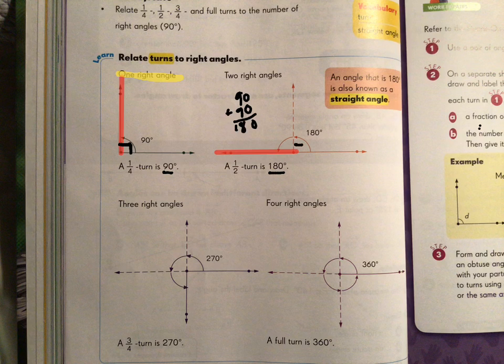So two right angles would give us 180 degrees because we know a right angle measures 90 degrees. So two of those together would give us 180 degrees and it is a half turn. So that is with two right angles.